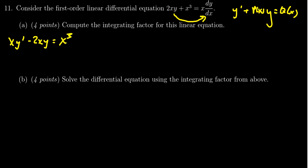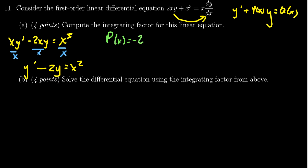We need the coefficient of y prime to be 1, so divide everything by x. This gives us y prime minus 2y equals x squared. When we standardize this linear equation, we get y prime minus 2y equals x squared. Therefore, the function p(x) is just negative 2. Don't forget the sign — the sign is part of it as well.